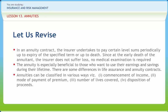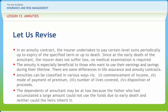Annuities can be classified in various ways: (1) commencement of income, (2) mode of payment of premium, (3) number of lives covered, and (4) disposition of proceeds. The dependents of the annuitant may be at a loss because a person who had accumulated a large amount could not use the funds due to early death, and neither could the heirs inherit it.